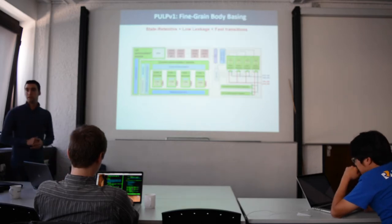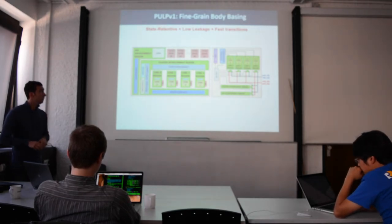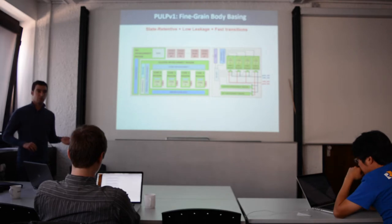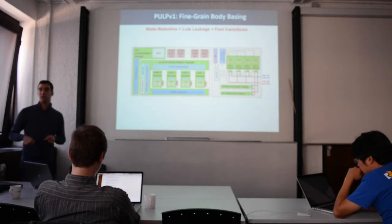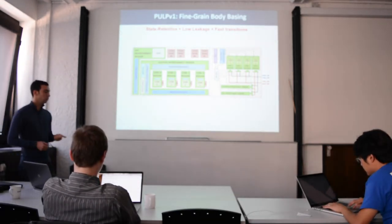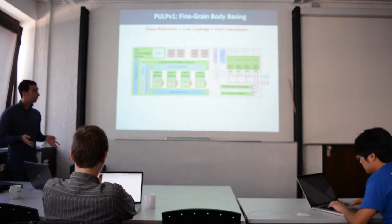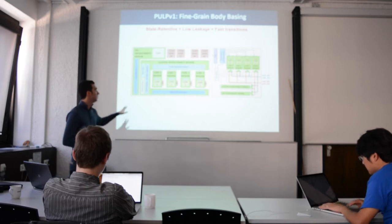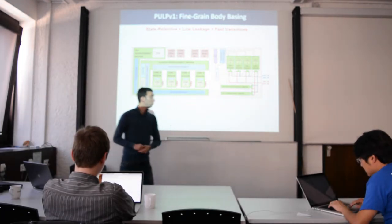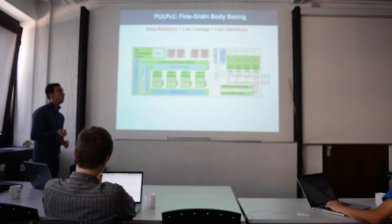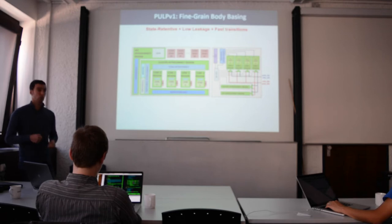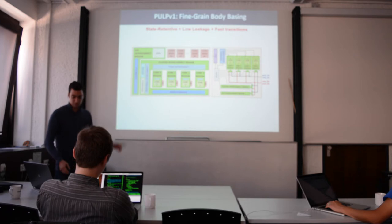In this chip, we explored fine-grained body bias partitioning of the platform. By exploiting body bias, you can dynamically modulate the threshold voltage of the transistor. When you need to gain performance and energy efficiency, you apply forward body bias to increase frequency and energy efficiency. When you don't need to use a block of the system, you apply reverse body biasing to reduce leakage. In this architecture, we partitioned the system into six body bias regions, each controlled by a body bias multiplexer, allowing reverse or forward body bias to be applied independently on each region to modulate performance and leakage separately.